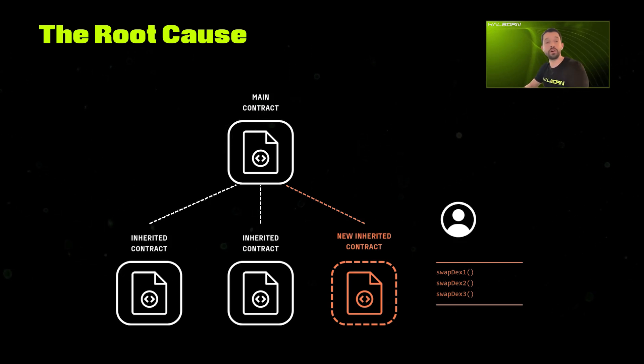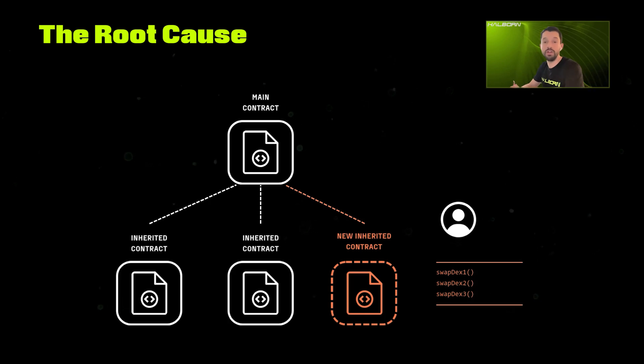The main contract had a withdraw function, and that one was protected. The problem was that the new swap functions were not protected — anyone could call them. So anyone could perform swaps and effectively steal money from the contract. These are the kinds of things we're working on every day on behalf of our clients. So tell us a little bit about your methodology — how did you go about uncovering this finding?